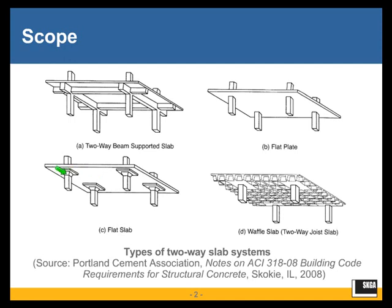For the same reasons of punching shear, the column top is sometimes flared, creating what are known as column capitals. Column capitals are parts of columns, not parts of the slab system, so they do not change the slab nomenclature.